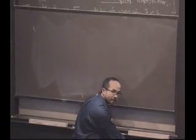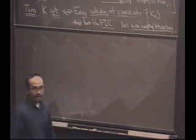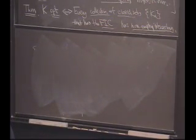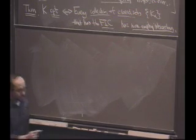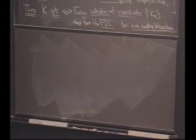Every collection of closed sets that has the finite intersection condition has non-empty intersection. So, I'm demanding that this, that I'm only looking at collections that have the FIC. Okay. Because there certainly could be some collections that don't. Namely, take two disjoint closed sets. Certainly, they would not satisfy the FIC, and I'd be demanding nothing about them. Okay. Good. So, that's just what I wanted to clarify with respect to compactness.